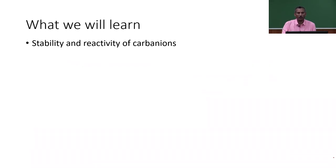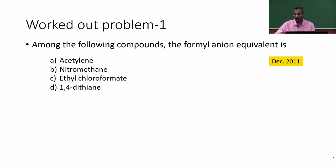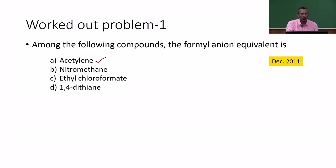In this session, we will learn about the stability and reactivity of carbanions. The first worked-out problem asks: among the following compounds, which is the formyl anion equivalent? The choices are acetylene, nitromethane, ethyl chloroformate, and 1,4-dithiane. This question was asked in the December 2011 NET examination.